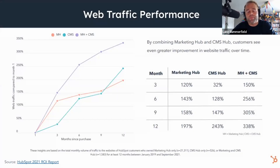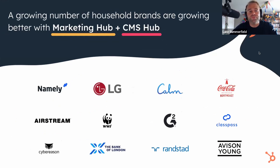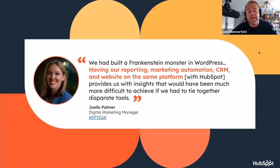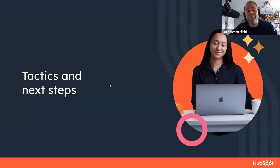Customers who use Marketing Hub and CMS Hub and the CRM together are our number one cohort for NPS. They're also generating the most web traffic — we saw double or triple digit improvements from customers using the combo together — and a huge increase in leads. One customer, Joelle, put it well: 'We built a Frankenstein monster on WordPress. Having reporting, marketing automation, CRM, and website all on the same platform provides us with insights that would have been much more difficult to achieve with disparate tools.'